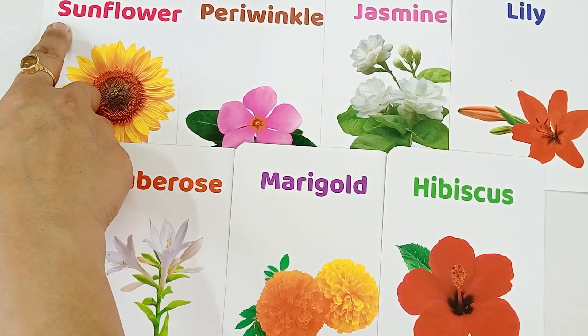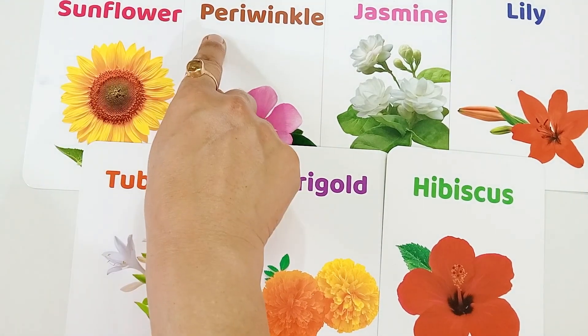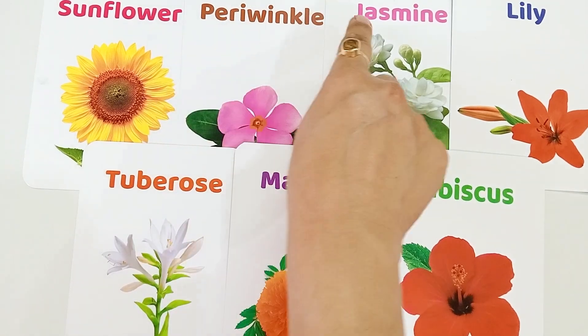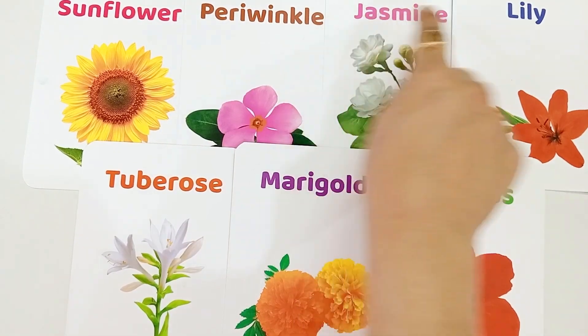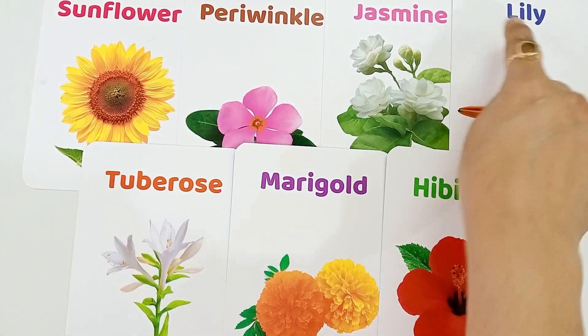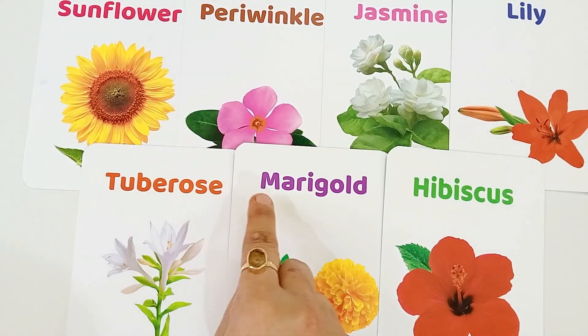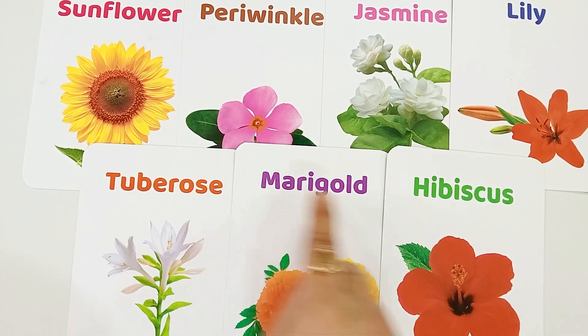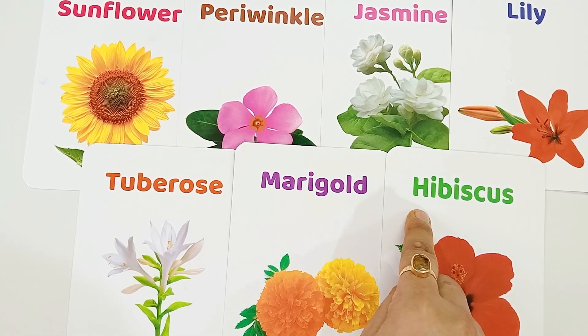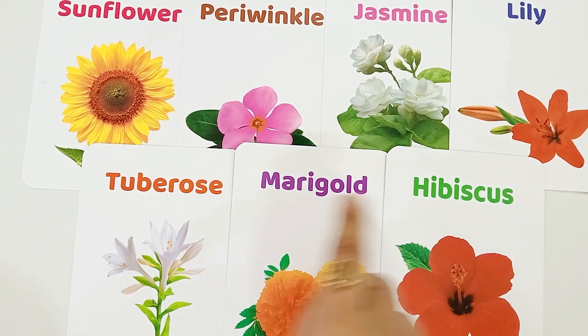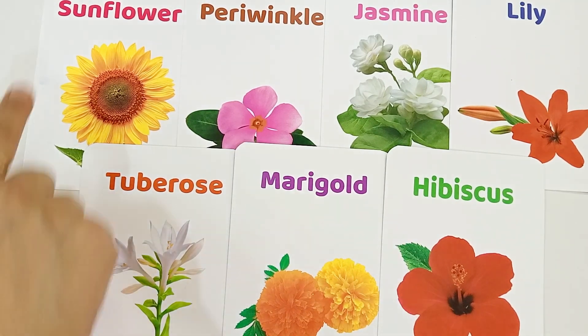So, S for Sunflower, P for Periwinkle, J for Jasmine, L for Lily, T for Tuberose, M for Marigold, H for Hibiscus. Here are some flower names.